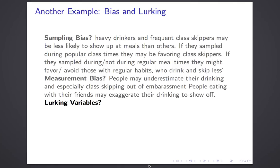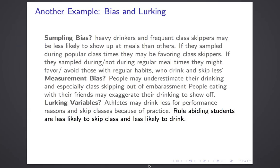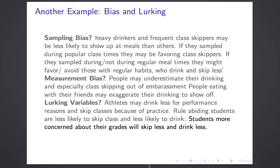For lurking variables: athletes are likely to drink less — affecting the explanatory variable — and may skip more classes due to practice and lost sleep. Most straightforwardly, rule-abiding or good students are less likely to skip class and less likely to drink — that's an aspect of the student affecting both variables. Likewise, students more concerned about their grades will skip less and drink less. There are many other possible lurking variables.